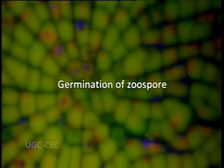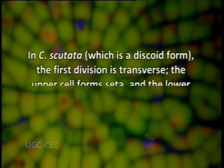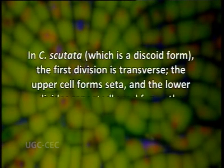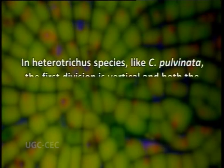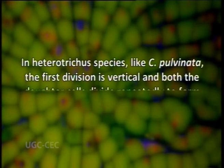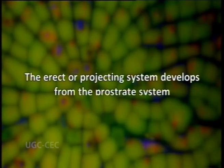Germination of zoospore: during germination the zoospore divides by a transverse or vertical cleavage. In Coleochaete scutata, which is a discoid form, the first division is transverse; the upper cell forms setae and the lower divides repeatedly forming the discoid thallus. Whereas in the heterotrichous species like Coleochaete pulvinata the first division is vertical, and both daughter cells divide repeatedly to form the prostrate system. The erect or projecting system develops from the prostrate system.